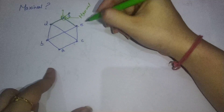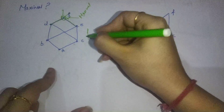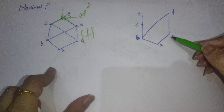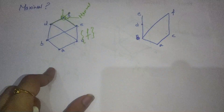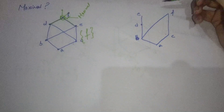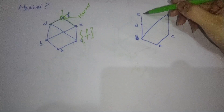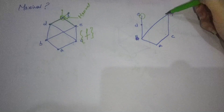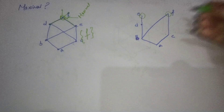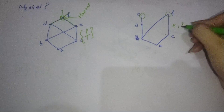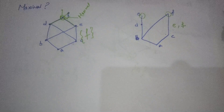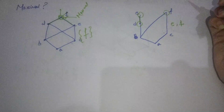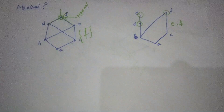So the maximal element here is F. In the next example, if you see the maximal elements, obviously you look at the top. E and F have no relation ahead of them, so in this example E and F are your maximal elements. B has a relation with E, so B is not the maximal element.